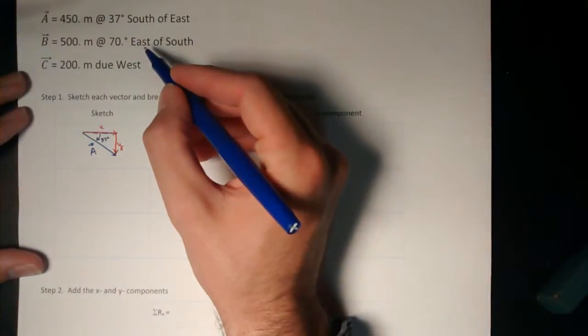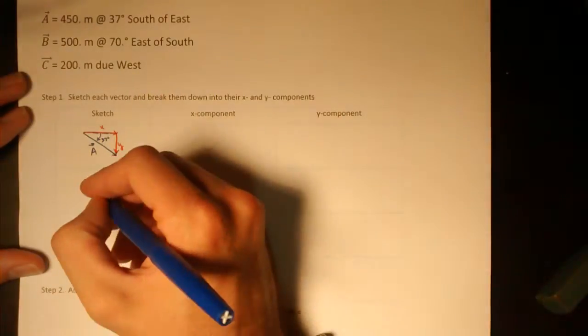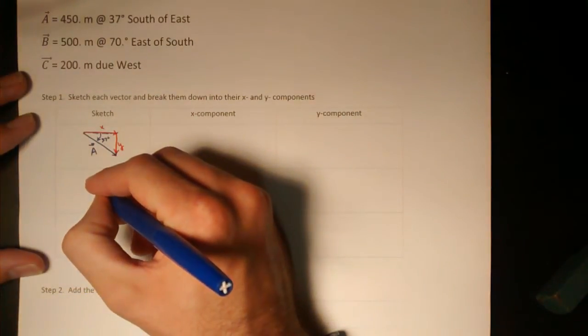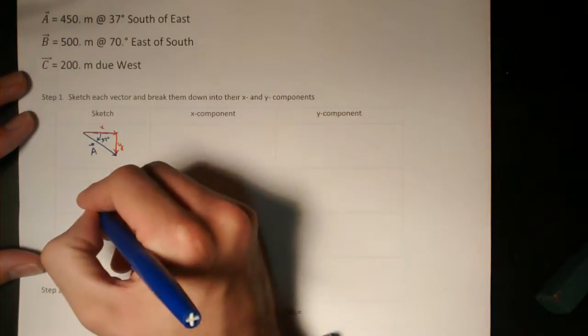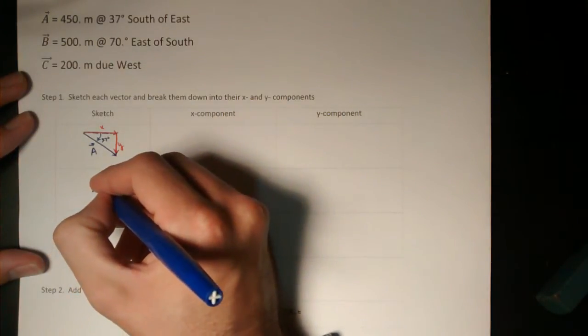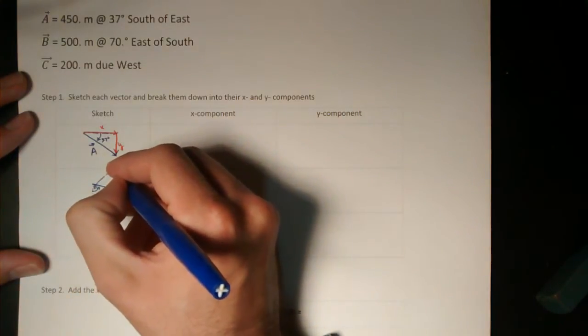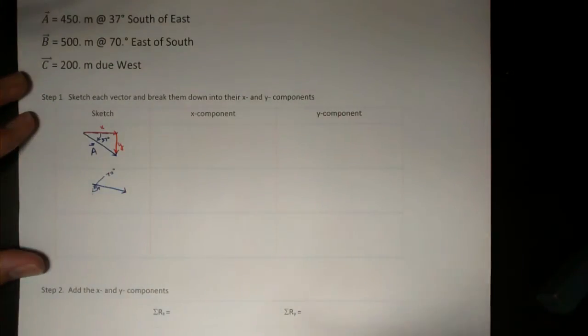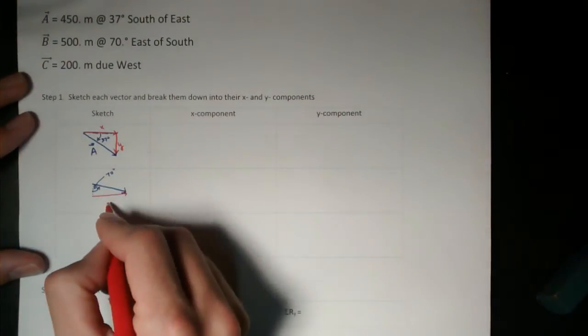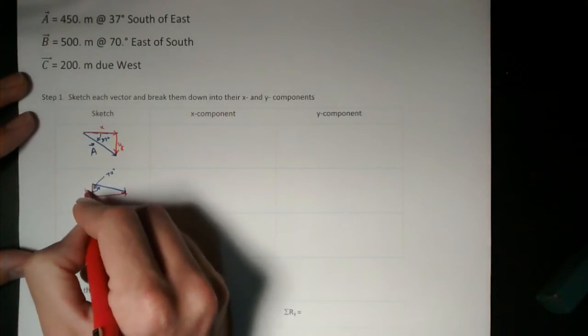For vector b, I want to go 70 degrees east of south, so if this is my south line, I have to go 70 degrees east of that. So this in here is the 70 degrees. So my x component would actually be on this side, and my y component over here.